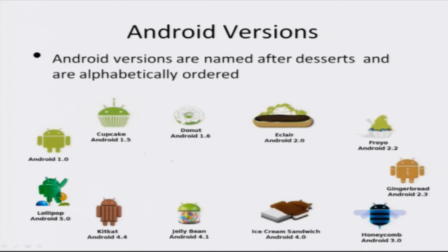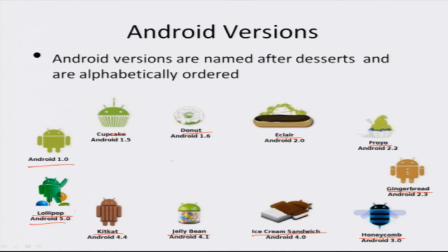Android was founded in 2007 and since then has had many versions, starting from Android 1.0 to Android 5.0. The version names include: beta, Cupcake, Donut, Eclair, Froyo, Gingerbread, Honeycomb, Ice Cream Sandwich, Jelly Bean, KitKat, and Lollipop. An interesting thing about all these version names is that they are named after desserts and are alphabetically ordered, with Lollipop being the latest version.